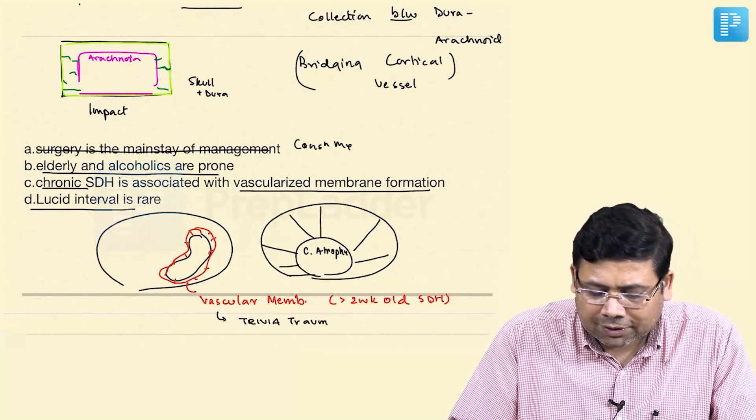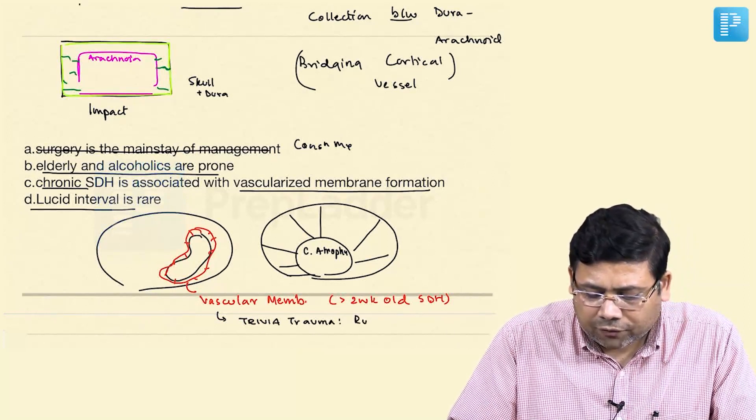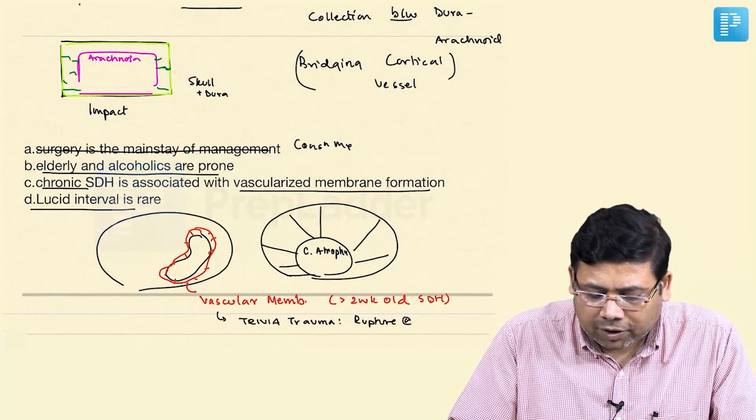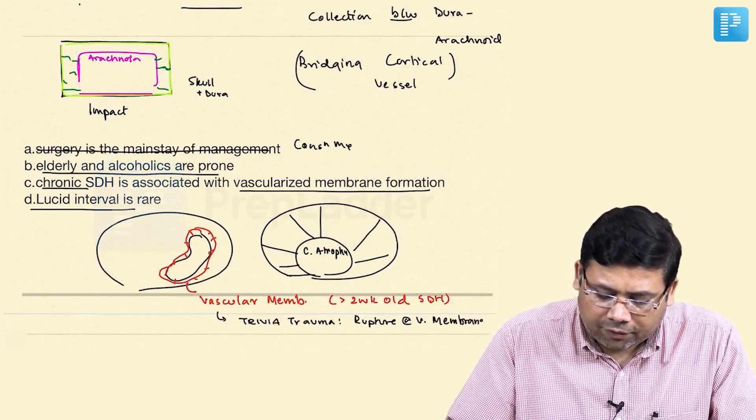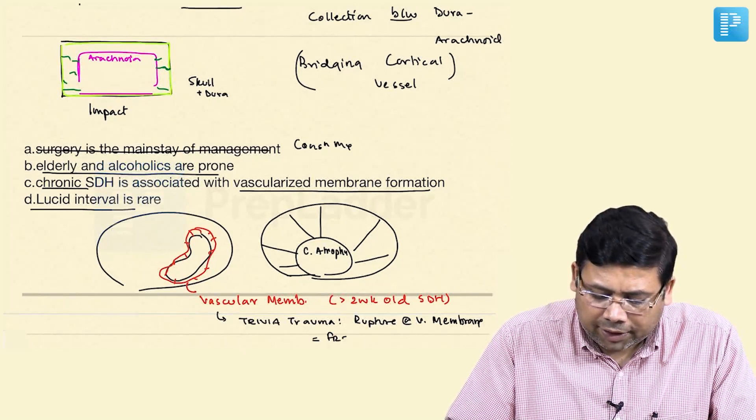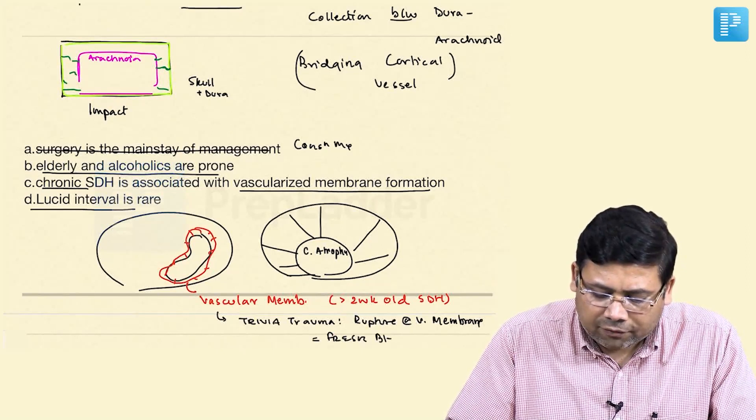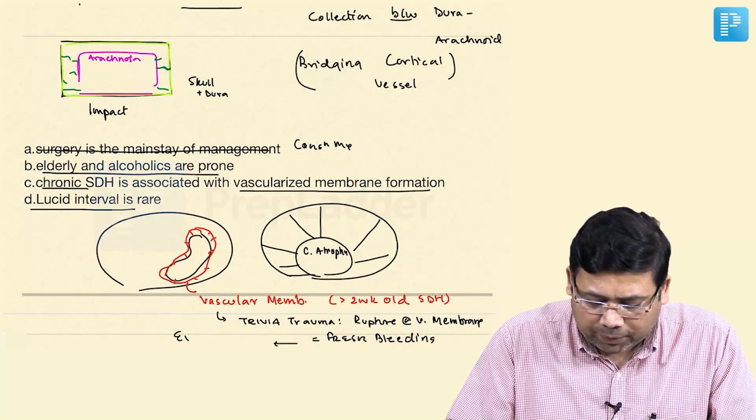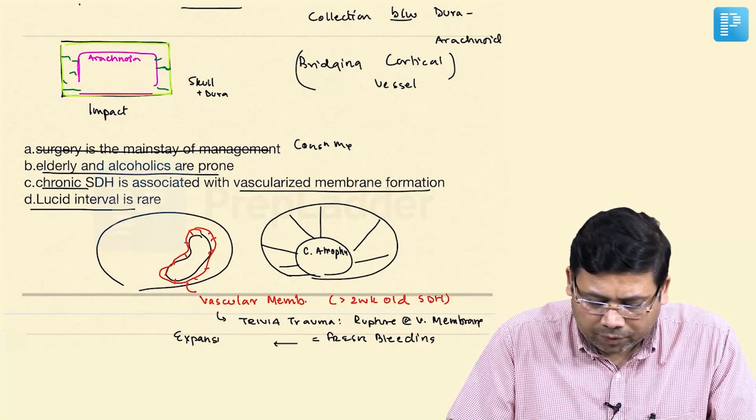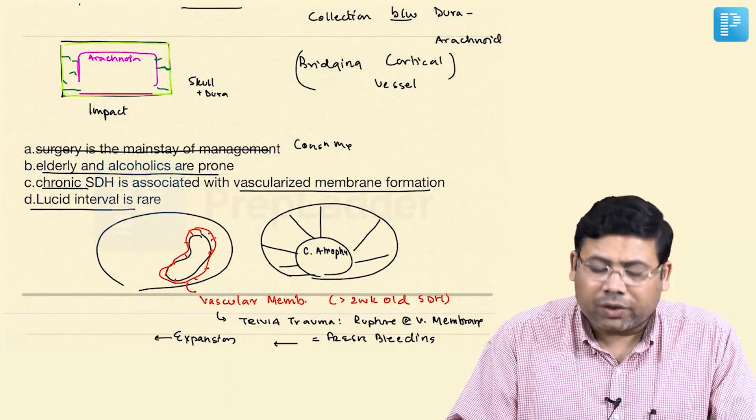the trivial trauma will cause this time rupture of vascular membrane and if it ruptures, there will be fresh bleeding and if there is fresh bleeding, there will be expansion of the hematoma and if there is expansion of hematoma, this is going to lead to what students?